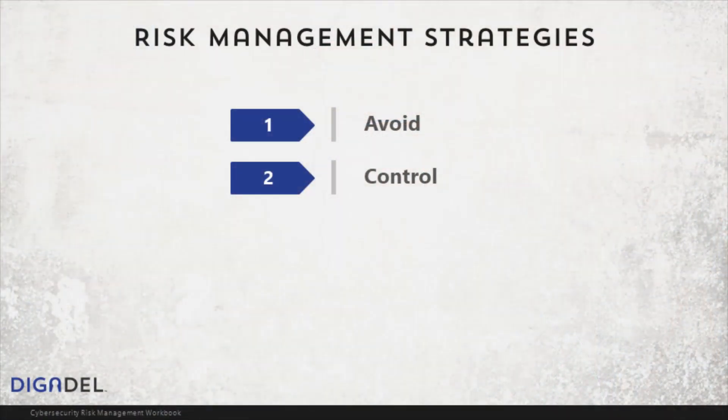The avoid strategy can work well for risk that would result in catastrophic failure if incurred, which cannot be reasonably addressed by any other strategies. The second strategy is control. With the control strategy, you continue to perform the activity while putting controls in place to mitigate or reduce the risk. Common cybersecurity controls include firewalls, intrusion detection systems, antivirus, and policies.